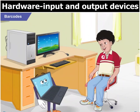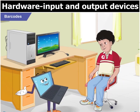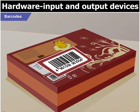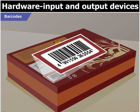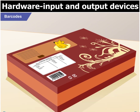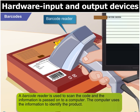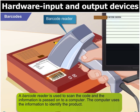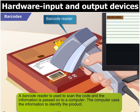What is a barcode, Toggle? Look at this toffee box for example. See these vertical bars? They together form a barcode and it includes all the information such as price, place of manufacture, etc. The barcode for each product is a unique combination of vertical bars that represents product information like the price. A barcode reader is used to scan the code and the information is passed on to a computer. The computer uses the information to identify the product.